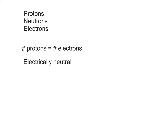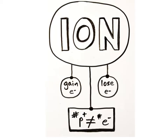they can gain, lose, or share their electrons in order to become stable. An ion is an atom that has either gained or lost one or more electrons, so it now has an unequal number of protons and electrons and is no longer electrically neutral. The process of gaining or losing electrons is called ionization.